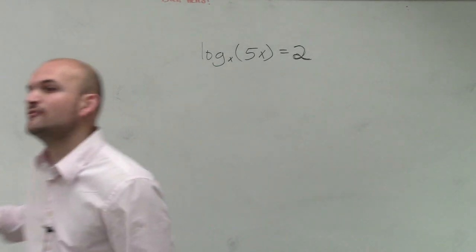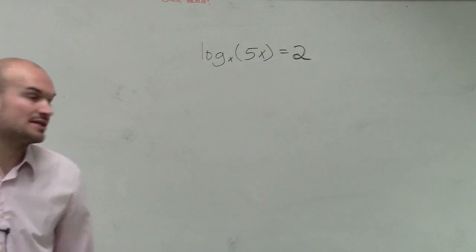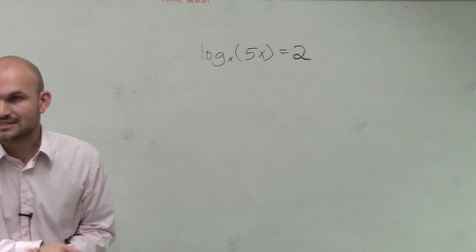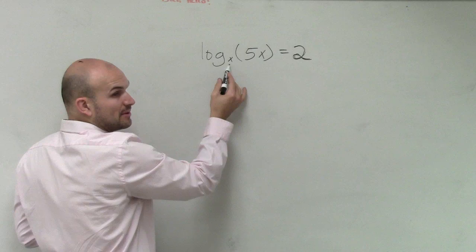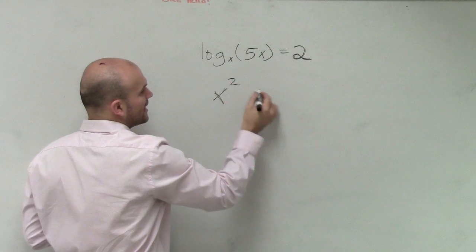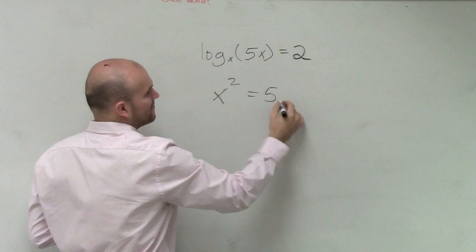Well, right now this is in logarithmic form. So the first thing that I'm going to want to do is write this in exponential form. So therefore, remember, base always remains the same. So I have x squared equals 5x.